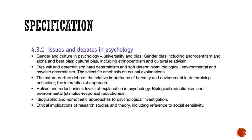As you can see here, we've looked at gender and cultural bias, free will versus determinism, and nature versus nurture. Now we're on to Holism and Reductionism. The key things you could be asked about specifically in the exam are levels of explanation, biological reductionism, and environmental reductionism. I'll also briefly touch on experimental reductionism — it isn't key for the exam, but it's a useful concept.